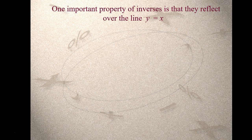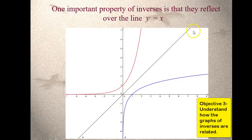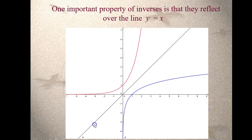An important property of inverse functions is that they are reflections over the line y equals x. Think back to linear functions — y equals x would have a slope of 1 and a y-intercept of 0, so it's the diagonal line through the origin. Here are two functions: the one in red is an inverse of the one in blue. If you imagine flipping either one over that black line, they would be a reflection of each other. That's a property of inverses.